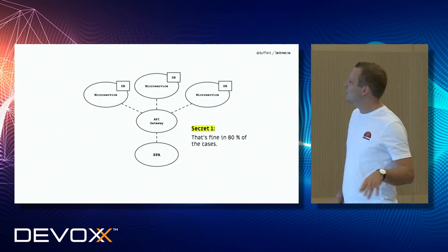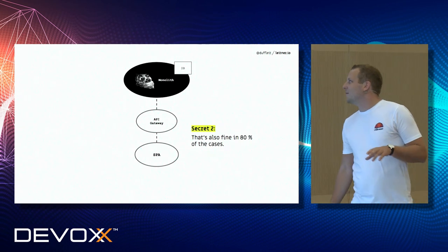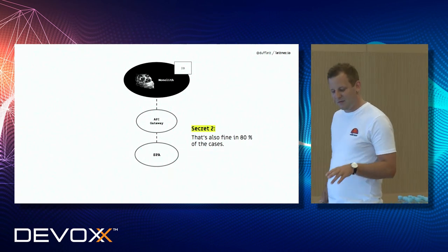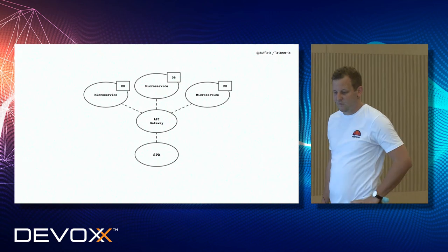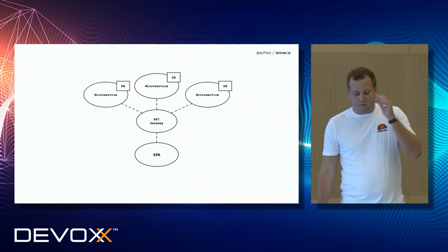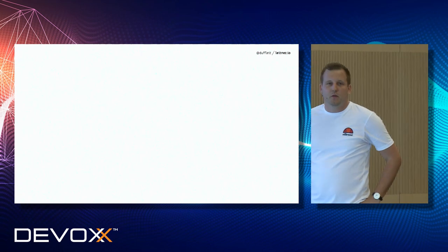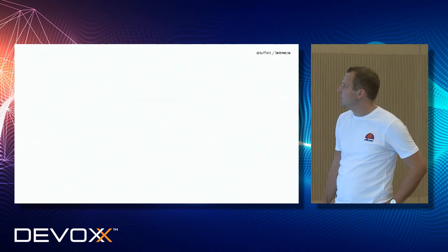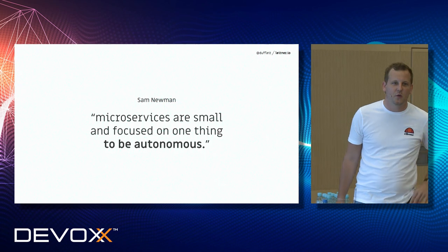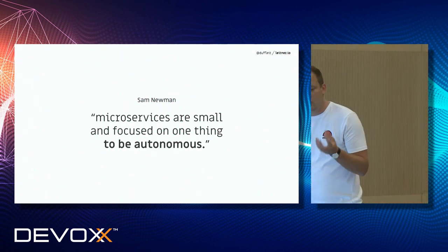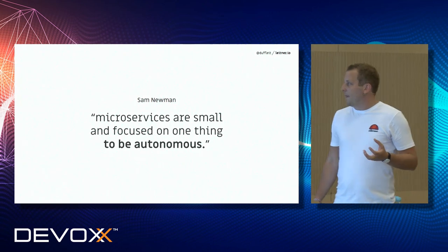There's a second secret: although in 80% of use cases that architecture is fine, let's assume we are doing microservices because we really have benefits from them. In comparison to micro frontends, microservices have the big advantage that they are clearly and well-defined. There's a great book from Sam Newman, 'Building Microservices,' and he clearly says microservices are small and focused to be autonomous. So we build small and focused services for one reason: to be autonomous.